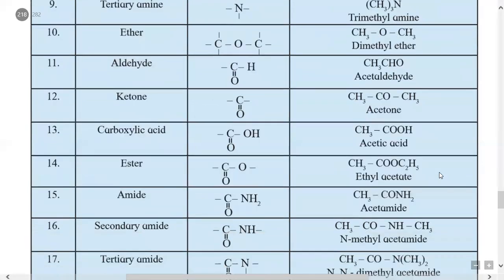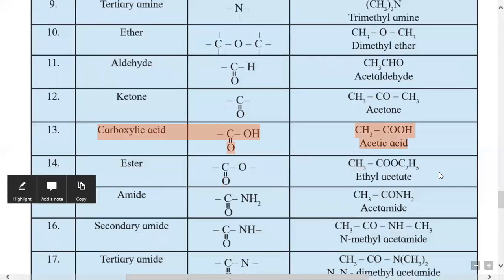The thirteenth type is carboxylic acid, with functional group -COOH (C double bond O with OH). Example is acetic acid. This functional group is the combination of the ketone functional group and the alcohol functional group.